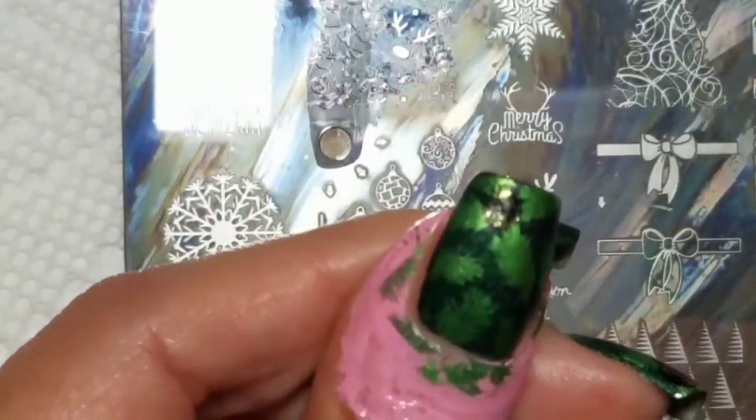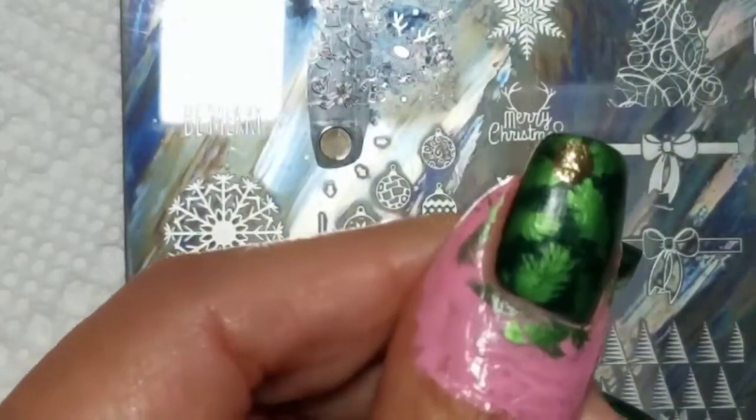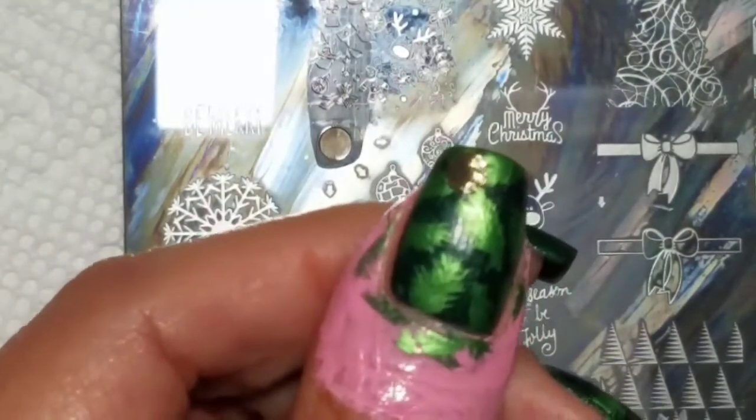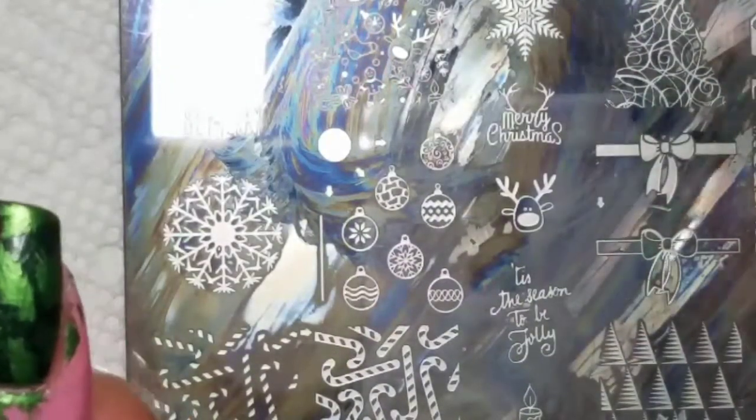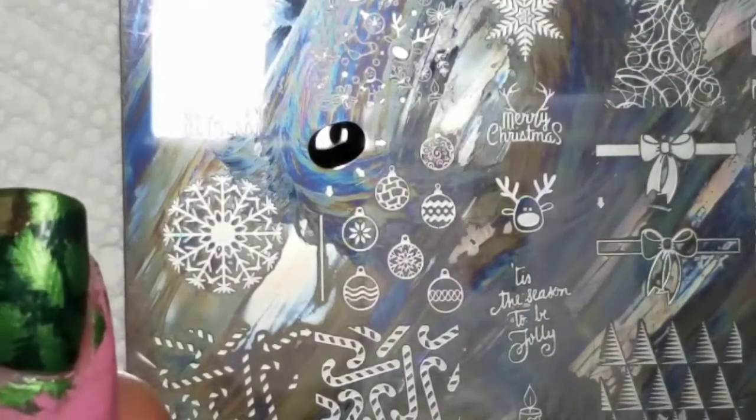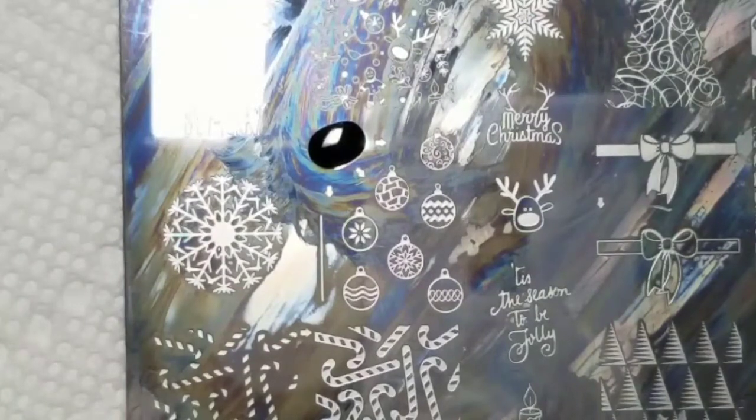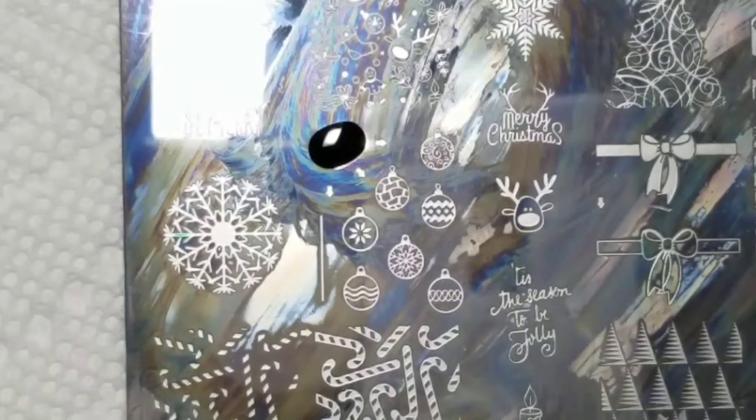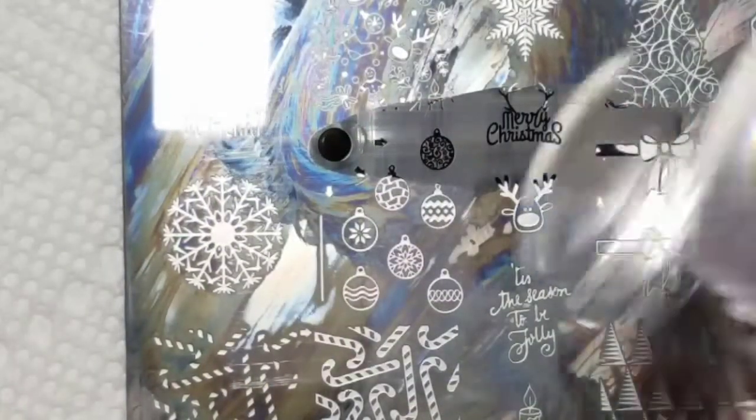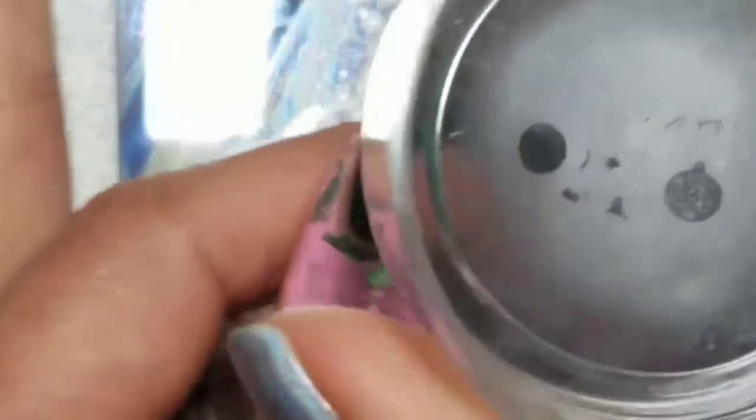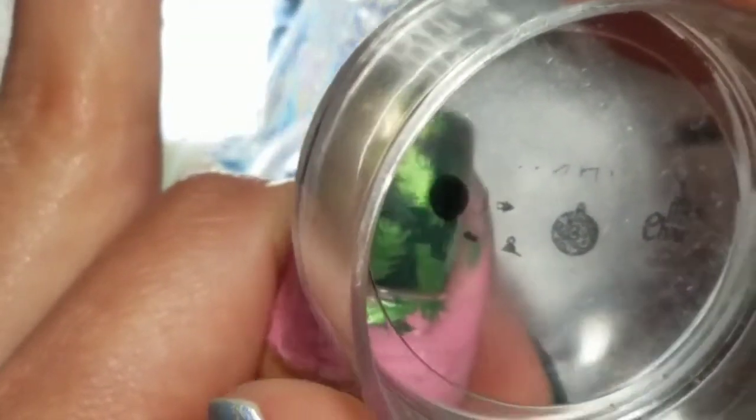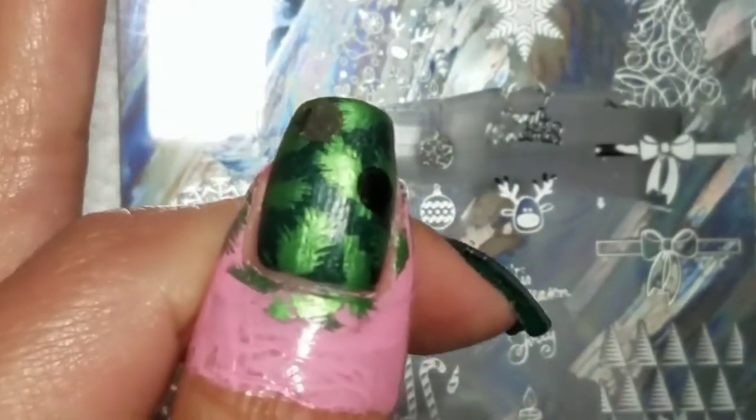As you can see that works great, and then I'm going to repeat that process and complete all the background ones first. This one, because I'm going to place on the left side of my nail, I'm going to scrape towards the right, so that the excess image is over here. Then I'm going to put red on this one.